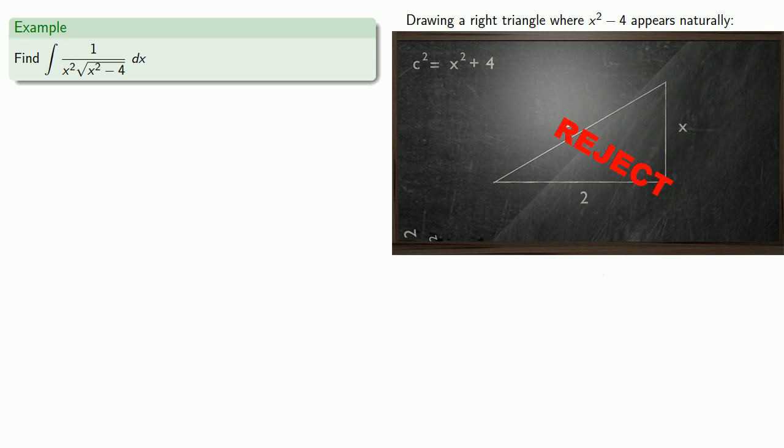So let's switch which sides have which lengths. For example, we might make our hypotenuse have length two. Find the Pythagorean relationship, do a little algebra, and we have something that's not x squared minus 4.